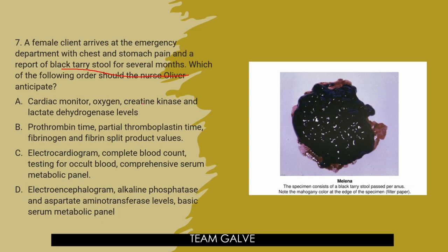The answer is letter C. An electrocardiogram evaluates the complaint of chest pain, a complete blood count determines anemia, and the stool test for occult blood determines blood in the stool. Cardiac monitoring, oxygen, creatinine kinase, and lactate dehydrogenase levels are appropriate for a cardiac primary problem. A basic metabolic panel, alkaline phosphatase, and aspartate aminotransferase levels assess liver function. Prothrombin time, partial thromboplastin time, fibrinogen, and fibrin split products are measured to verify bleeding disorders. An electroencephalogram evaluates brain electrical activity. Hence, the answer is letter C.